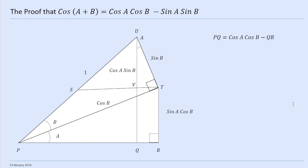Now the next thing we're going to look at is cos(a+b) = cos(a)cos(b) - sin(a)sin(b). We're going to use the same diagram. So looking at the diagram, PQ = PR minus QR. PR is cos(a)cos(b), because this PT piece is cos(b) and then this angle is a, so PR is cos(a)cos(b).